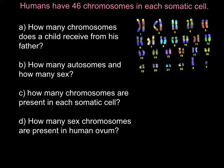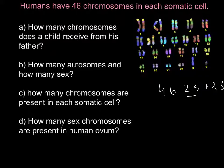Here is the answer to question one: how many chromosomes does a child receive from his father? We have 46 chromosomes in total — 23 come from the mother and 23 come from the father's side. So the answer is that we receive 23 chromosomes from the father's side.